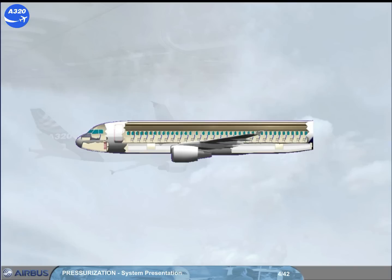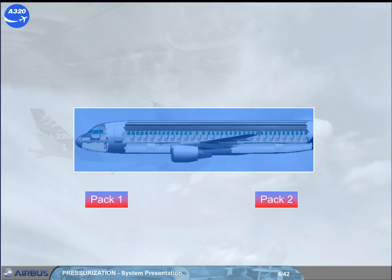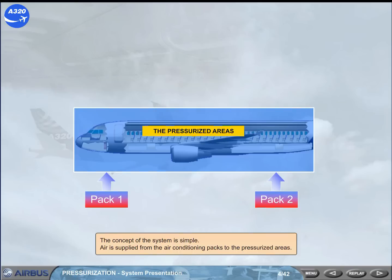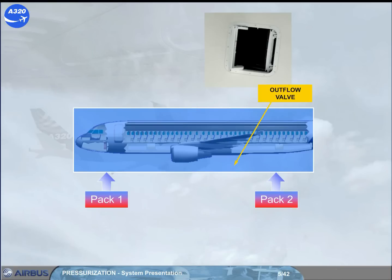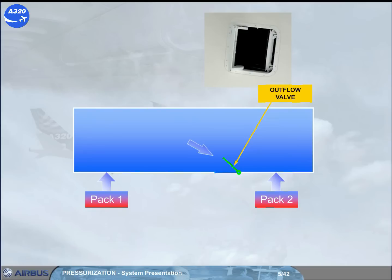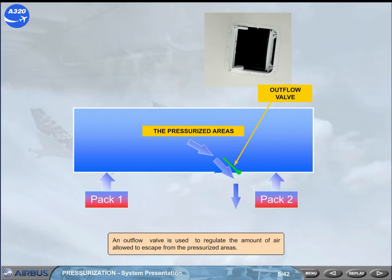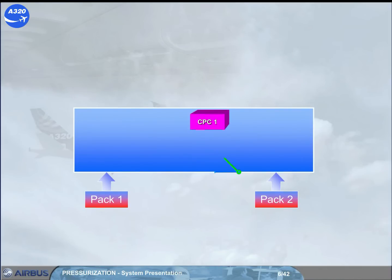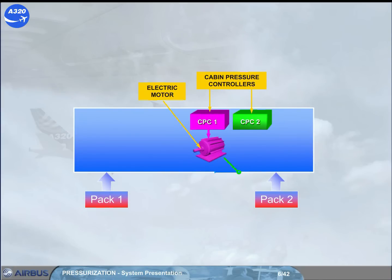The concept of the system is simple. Air is supplied from the air conditioning packs to the pressurized areas. An outflow valve is used to regulate the amount of air allowed to escape from the pressurized areas. Automatic control of the outflow valve is provided by two cabin pressure controllers, CPC. Each controller has an electric motor to move the outflow valve.